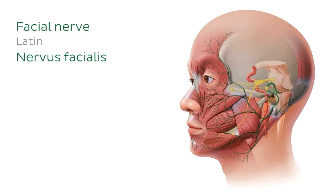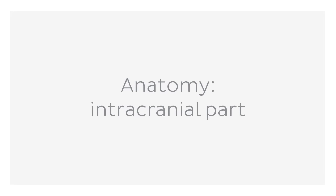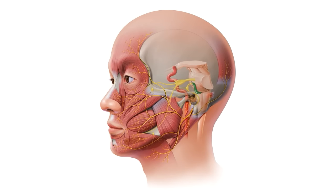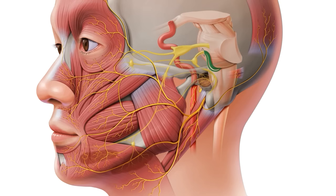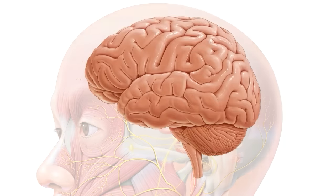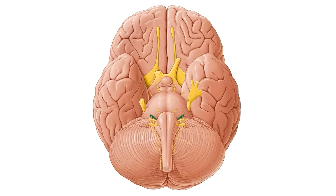Moving on to the anatomy of the facial nerve, the first section is the intracranial portion — the most medial part, arising directly from the brainstem nuclei. In this zoomed-in image you can see the intracranial part highlighted in green and the brainstem highlighted in blue. The facial nerve arises specifically from the pontomedullary junction, now highlighted in blue. We can also see the internal acoustic meatus encircled in blue, which is where the facial nerve enters the temporal bone.